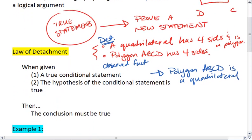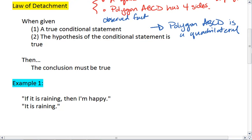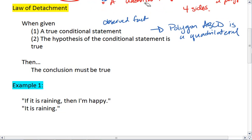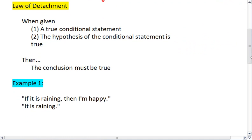There are a couple of laws of logic we'll look at that we'll want to use when forming these deductive reasoning arguments. The first law of logic is the law of detachment. The law of detachment tells me that if I have a true conditional statement, and if the hypothesis of that statement is true, then the conclusion must be true.